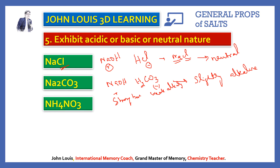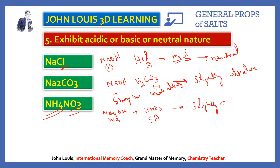Another example is ammonium nitrate. Ammonium comes from the weak base ammonium hydroxide, and nitrate comes from nitric acid, which is a strong acid. Therefore the salt ammonium nitrate, obtained from a strong acid and a weak base, will be slightly acidic in nature.